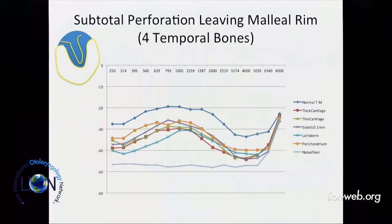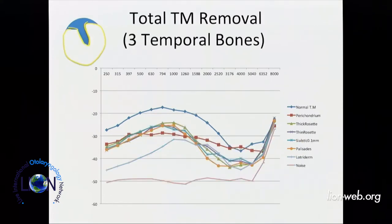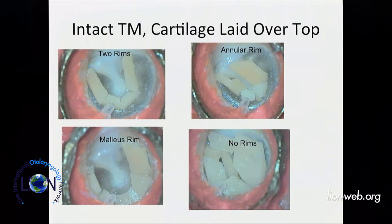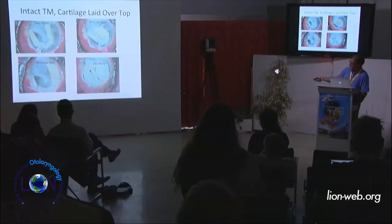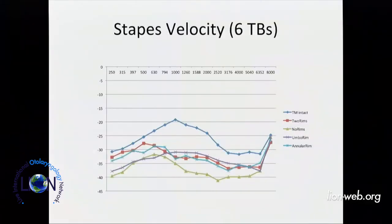When we take the annular rim out, we lose the low frequencies too — that hinge or rim seems very important. With total loss, it's almost as bad as replacing the whole tympanic membrane. Thick cartilage tends to do a little bit worse than perichondrium. When we load the intact tympanic membrane in different ways, we find the same effect: when there's no annular rim, you lose both low and high frequencies, but if you leave the annular rim, you tend to keep the low frequencies. Clinically, there's not much difference between fascia and cartilage.